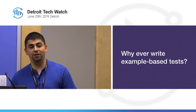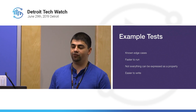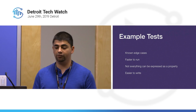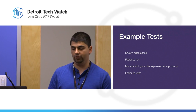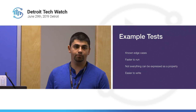You might wonder why you'd ever write an example-based test again. But example-based and property-based tests really complement each other. Example-based tests are good for known edge cases and explicit code paths you want to always run; they're also faster to run. Property-based tests generating thousands or millions of scenarios take longer. Not everything can be expressed as a property, so in those cases you drop down to example-based testing. And property-based tests require more thought to write.